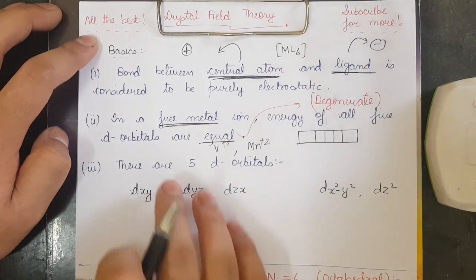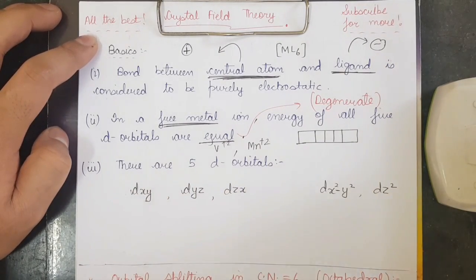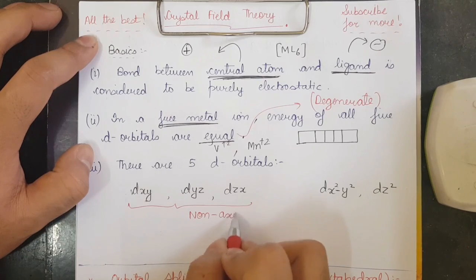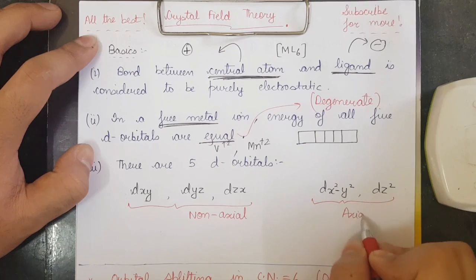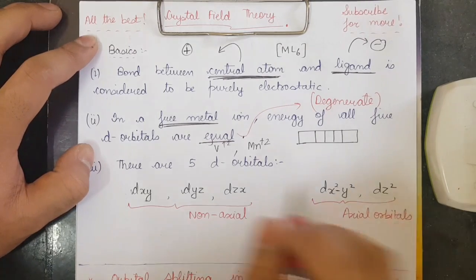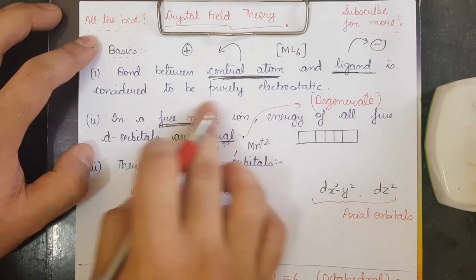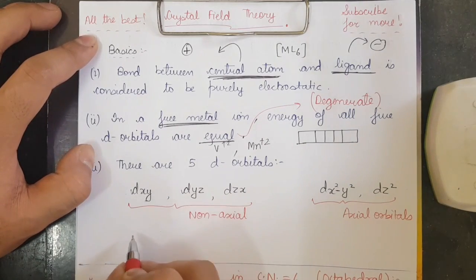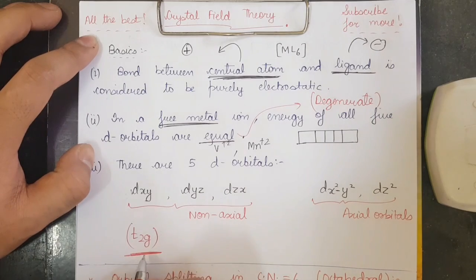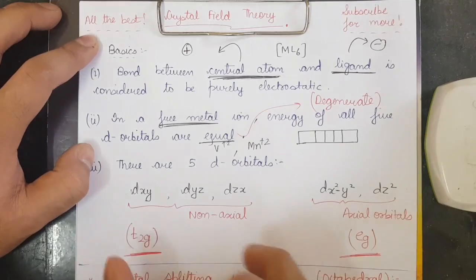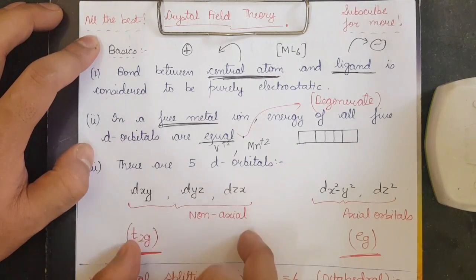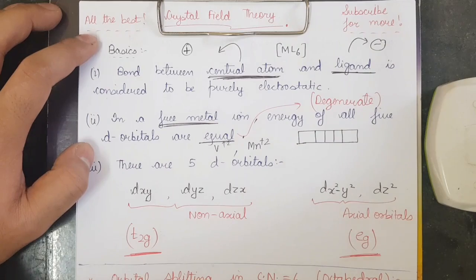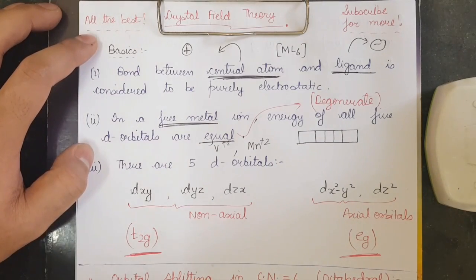The third basic: there are five d-orbitals. dxy, dyz, dzx are known as non-axial d-orbitals, and dx²-y², dz² are known as axial d-orbitals. In a free metal ion with no ligands, all five are equal in energy. Non-axial orbitals are also denoted as t2g, and the axial orbitals are denoted as eg. These notations are important to remember.